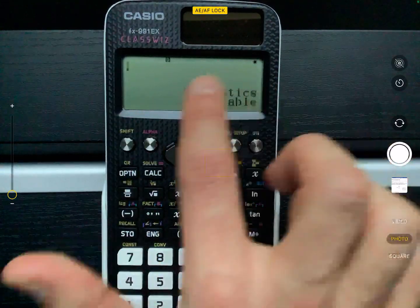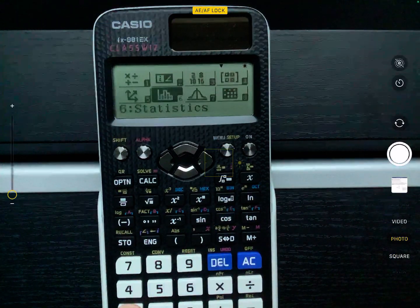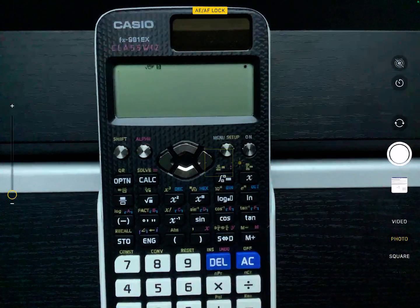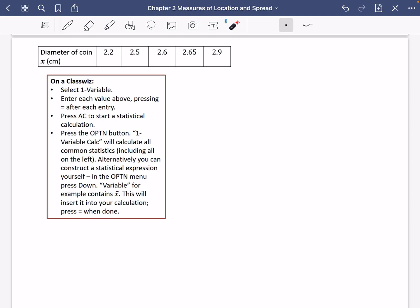OK, if you want to get off this bit where it says statistics one variable, just press menu and then press number one. Number one is just the calculation one that takes you back to normal. OK, so let's go back to GoodNotes so I can show you about what else we're going to do here.